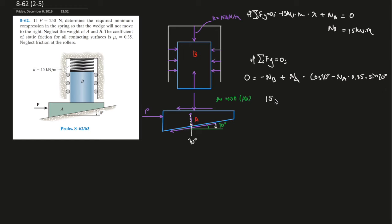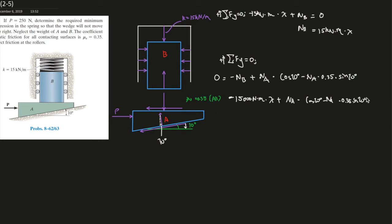And since we already know what Nb is, 15,000 newtons per meter times x. This is negative. Negative. Plus Na. Plus Na times cosine of 10 minus Na times 0.35 times sine of 10 degrees. The whole thing equals zero. Let's simplify Na to this side and move this to the other side.